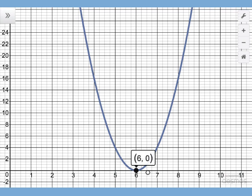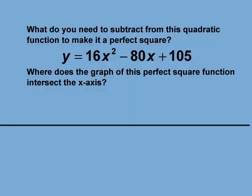Let's look at a final example. What do you need to subtract from this quadratic function to make it a perfect square? y equals 16x squared minus 80x plus 105. Where does the graph of this perfect square function intersect the x-axis?